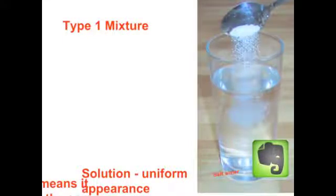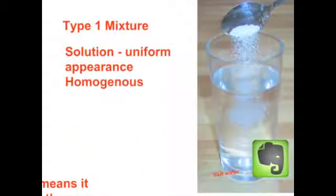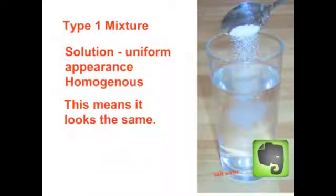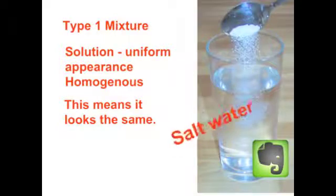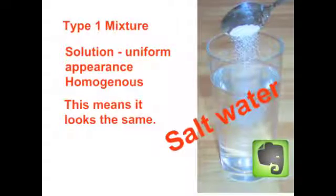Here's the first type of mixture. It's a solution, uniform in appearance, or homogenous. This means it looks the same. Salt water would be a great example. Go ahead and add it to Evernote.